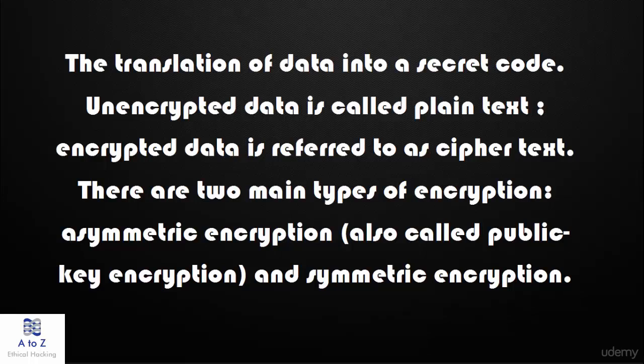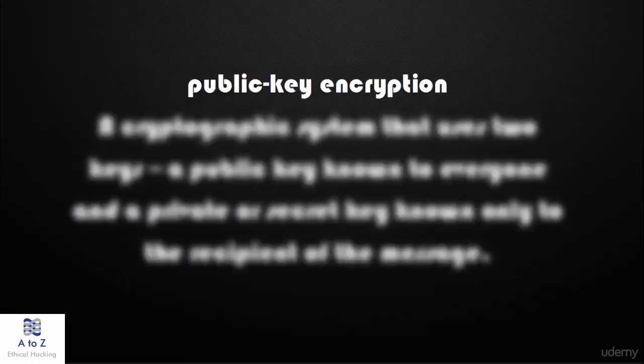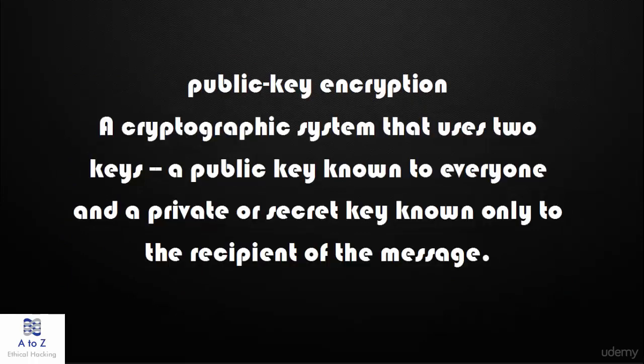Asymmetric encryption, which is also called public key encryption. In asymmetric encryption, a cryptographic system uses two keys: a public key known to everyone, and a private or secret key known only to the recipient of the message.